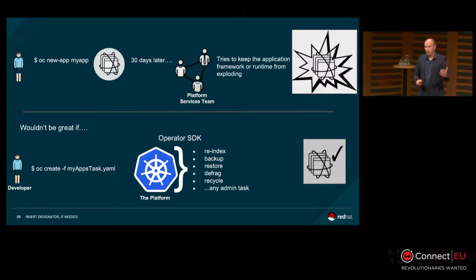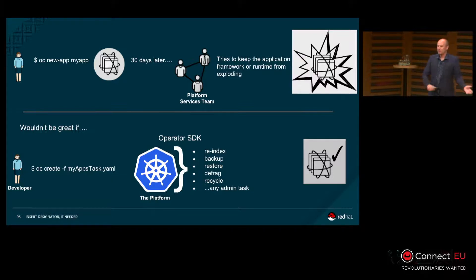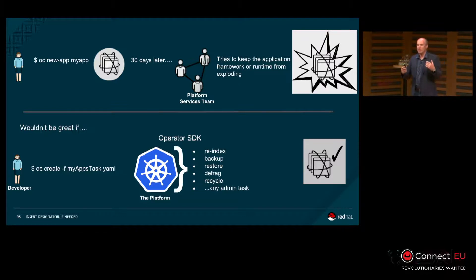At the top you've got a user coming along, standing up an application. OC is the OpenShift command line. NewApp is one of these developer tooling commands — you say go look at this GitHub repo, spin up that Java code, package it with the JDK, bring in a Couchbase database, link them all together. But that's got the application running — who's going to look after it in 10, 20, 30, 120 days, or two years' time? Wouldn't it be great if there was a MyTasks app, an operator that would look after indexing, backup, defragmentation, recycling, in-place upgrades — all the components we currently have to do manually or schedule teams to do?